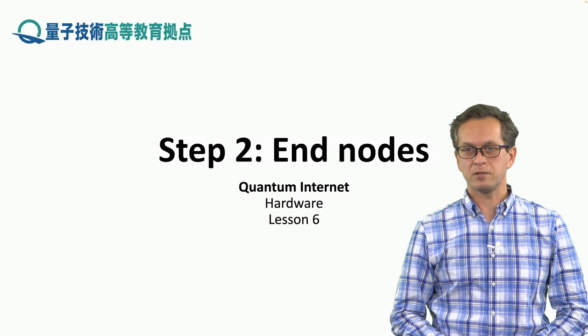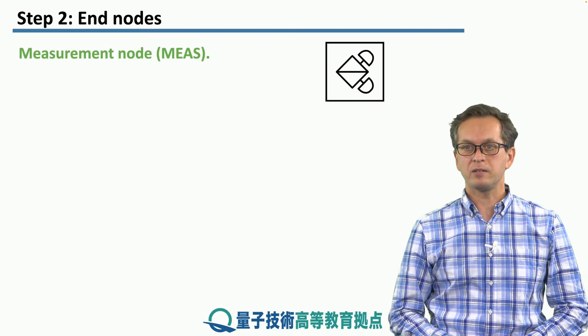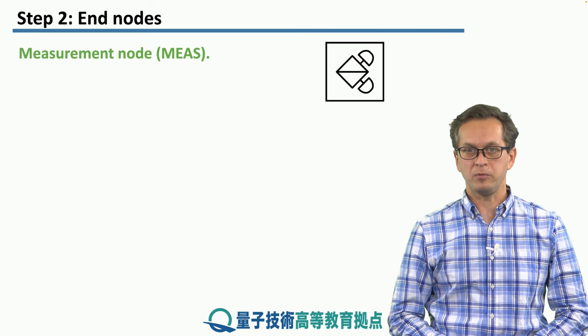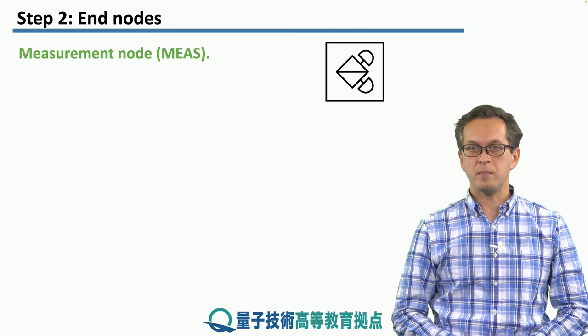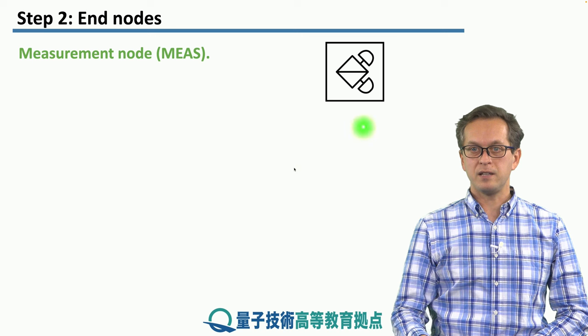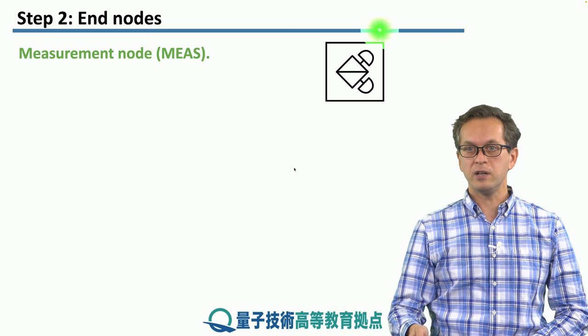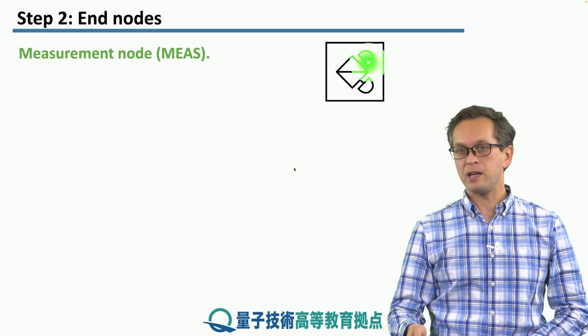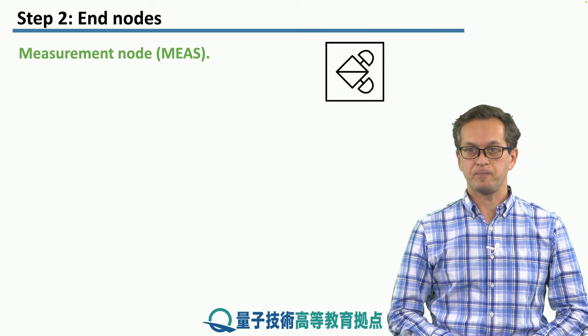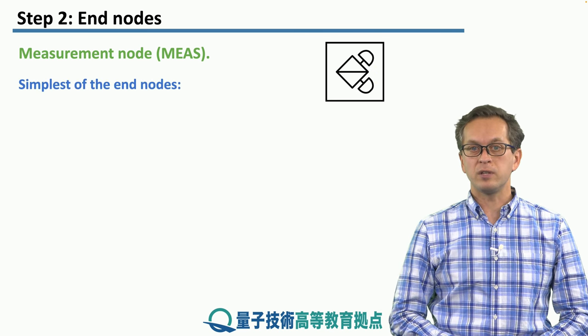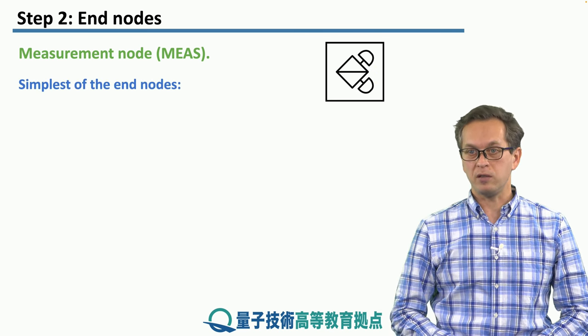Step 2. End nodes. Let's talk about the various end nodes in a quantum network. And we're going to begin with the measurement node. This is the icon for the measurement node over here, which looks like a beam splitter with two detectors.